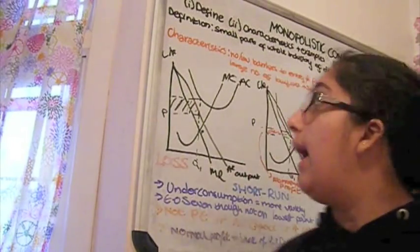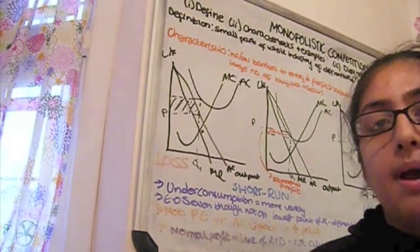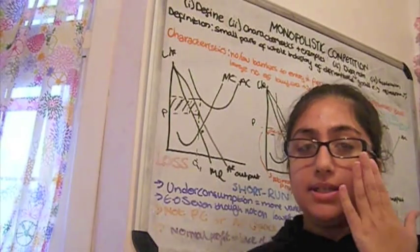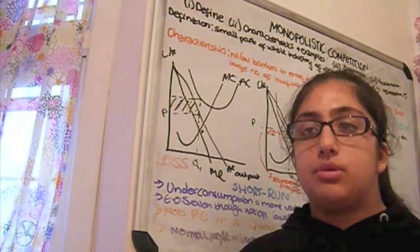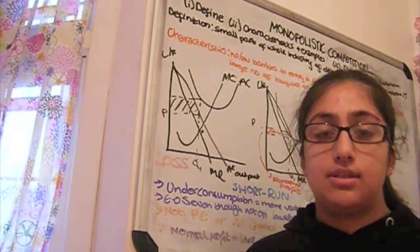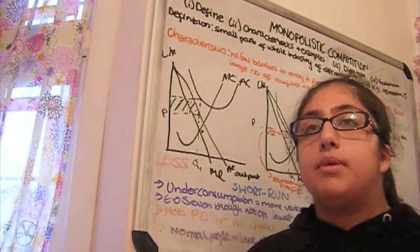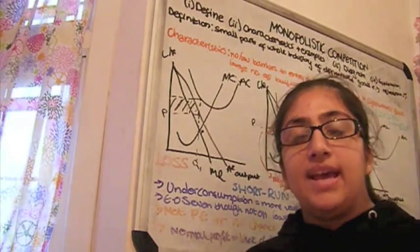In this video we're going to be looking at monopolistic competition. Monopolistic competition is similar to perfect competition, however the difference being the good or service provided is differentiated, it is not identical. Now a monopolistically competitive firm is one which makes up a small part of the industry, and the industry is for a product which cannot be provided identically in all the firms.